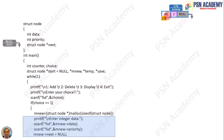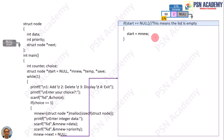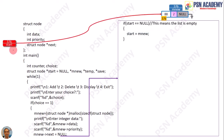If start is null, this means the list is empty — that is, the queue is empty — so the new node will be the first node. So start will be set to mnew. Here, start is null; we change start to 376, and it will start pointing to the mnew at 376.